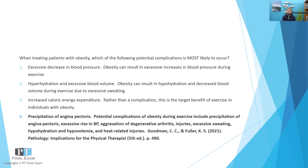So the correct answer was precipitation of angina pectoris. This is one of the potential complications because of the cardiovascular demand — the demand of the heart tissue is exceeding the supply of oxygen that the cardiovascular system can deliver, resulting in angina pectoris, the chest pain associated with exercise and obesity. The resource on this was Goodman's Pathology and Implications for PTs. When you get excess adipose tissue, it begins to act as its own organ — it can actually exacerbate pain, low back pain, and joint pain.